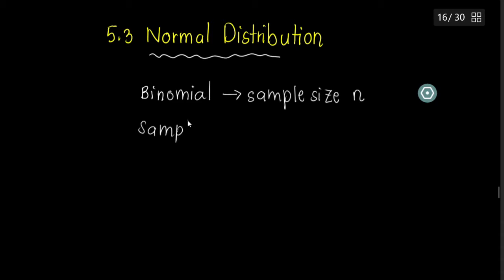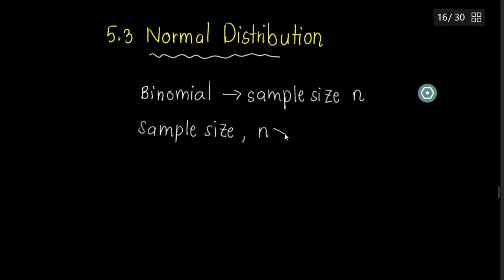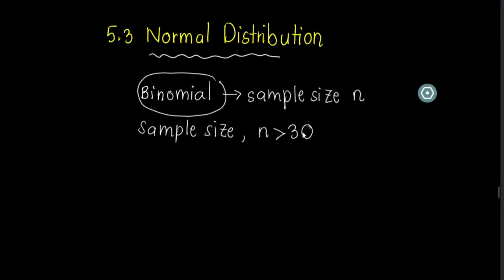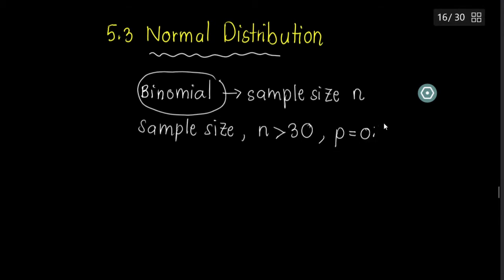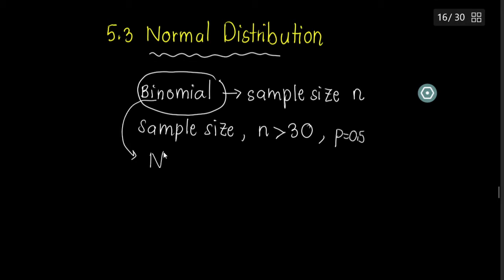If you recall from part 2, we did an experiment for 10 students — 3 times you shot and got a strike. But now let's say your sample size is very big, like bigger than 30. All these will affect the calculation if you use binomial. So if your sample size is more than 30 and your probability of success is around 0.5, this will affect your binomial calculation.